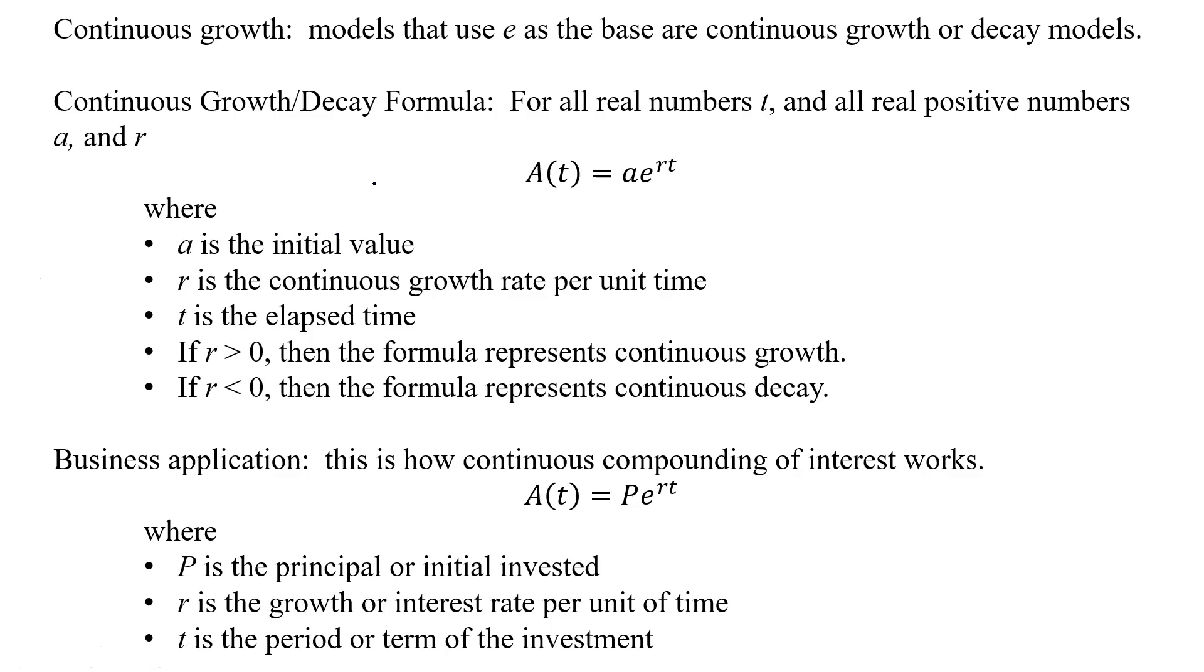With continuous growth, we use models that use e as the base for continuous growth or continuous decay, depending on what our a is. We have a continuous growth slash decay formula. For all real numbers t and all real positive numbers a, so we're only going to worry about those a's that are positive, but what happens is that r is going to now come into play. So a is the initial value. Then we're going to raise that e to the r, which is going to be our rate, times our time. r is the continuous growth rate per unit time, and you need it as a decimal if it's a percent initially. t is the elapsed time.